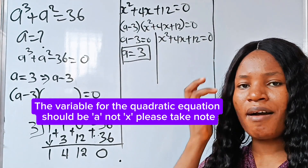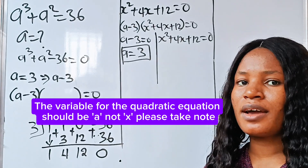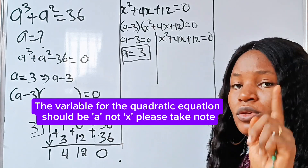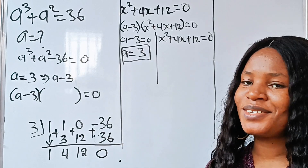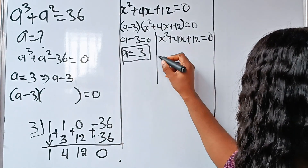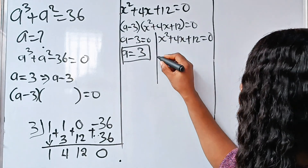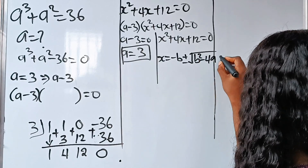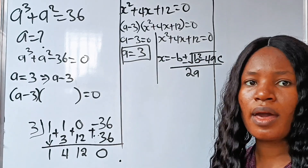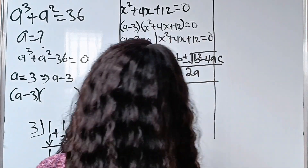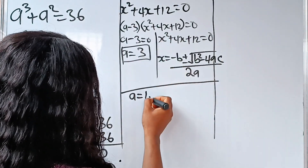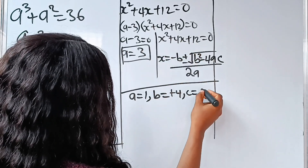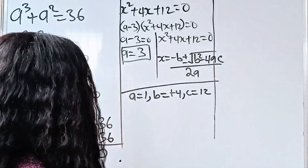If this is the first time you are coming across this channel, please subscribe and turn on your notification bell — like, comment, and share. Now, for this quadratic, let's use the quadratic formula: x equals minus b plus or minus the square root of b squared minus 4ac, all divided by 2a. In this case, a is the coefficient of x squared, which is 1; b is the coefficient of x, which is 4; and c is our constant, which is 12.